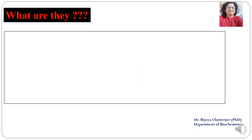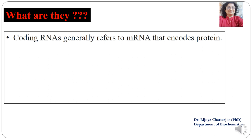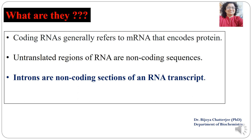Coding RNAs generally refers to mRNA that encodes for proteins. The untranslated regions of RNA are non-coding sequences — they do not code for any proteins but they have other roles to play in the body. Introns are the non-coding sections of RNA transcript. All this while we knew that the introns are of no use, but now it has been fully established that introns have very important roles to play in gene regulation and other activities of the cell.